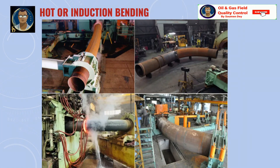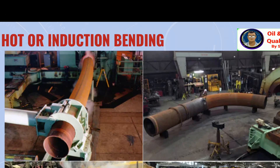The induction coil advances continuously along the length of the pipe during the bend forming operation. Hot bending is any process where curvature is induced by a load application at an elevated temperature, also known as heat assisted bending. The primary advantage of hot bending is that the material yield strength is lower from the room temperature value, requiring smaller forces to be exerted by the bending machine.